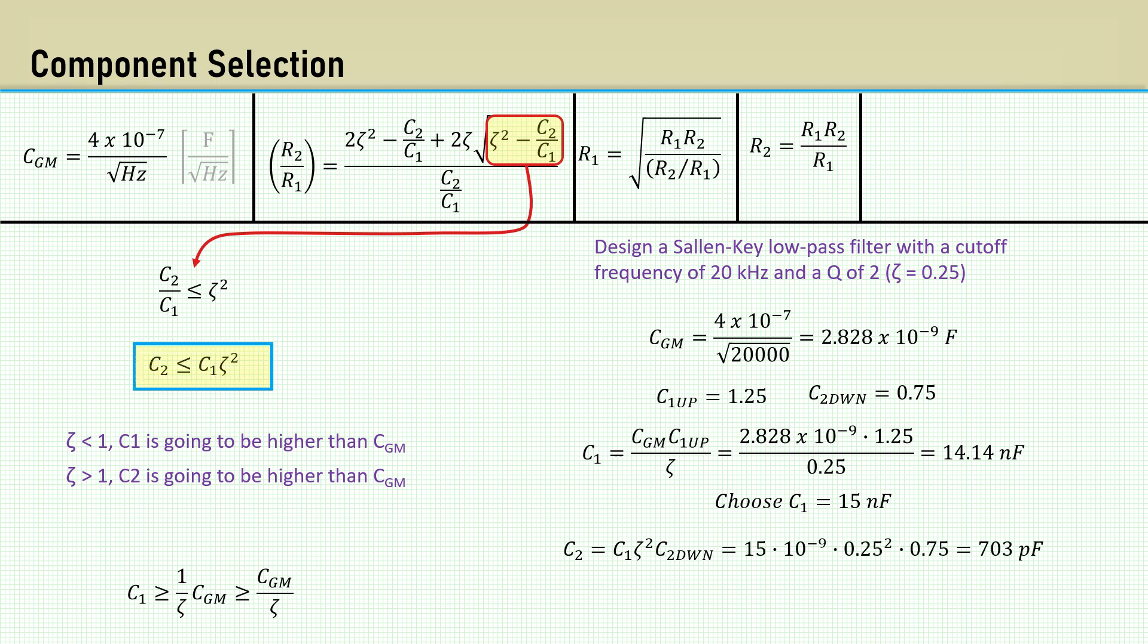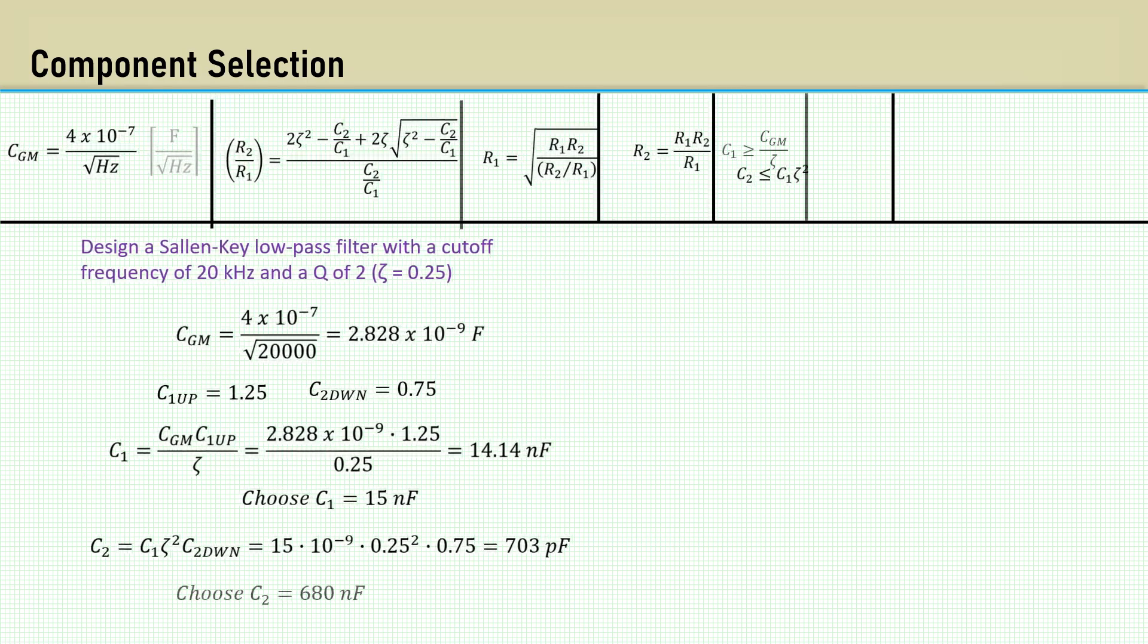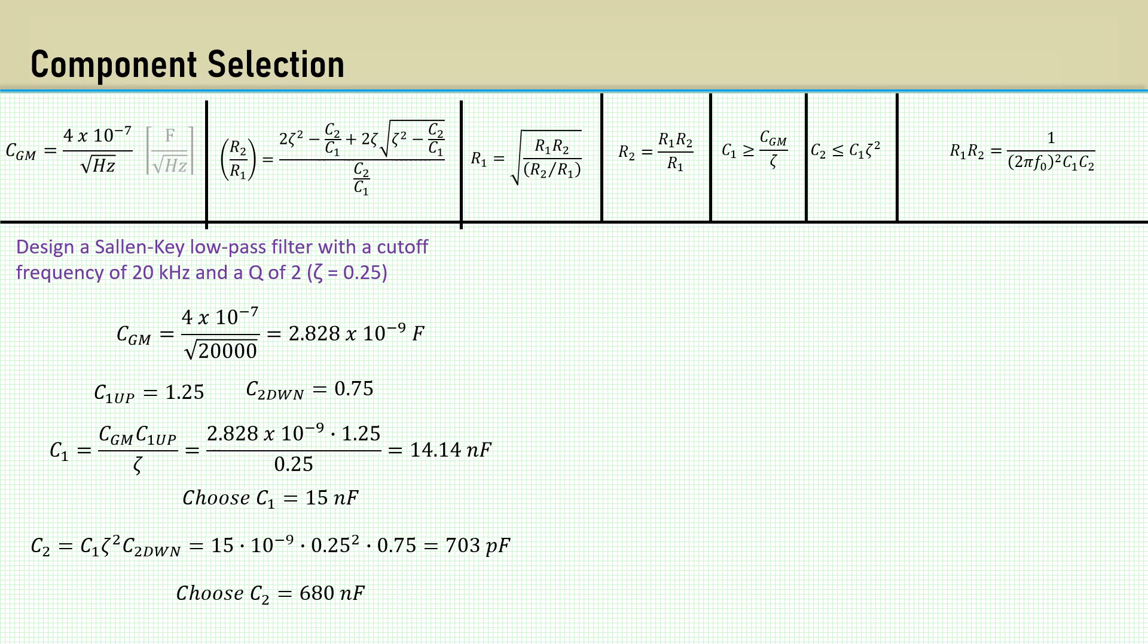C2 will be C1 times zeta squared, then times the C2 downscale factor. That yields 703 picofarads. I'll select an E24 series standard value of 680 picofarads. Now we can compute the C2 to C1 ratio, which comes out to 0.045333. Note that the exact ratio of C2 to C1 is not critical to obtain the desired Q.